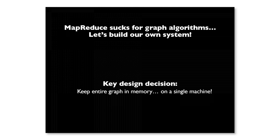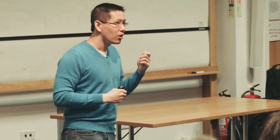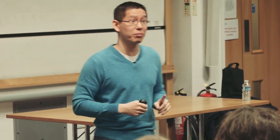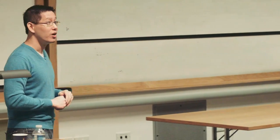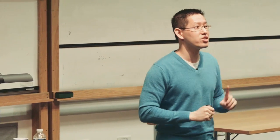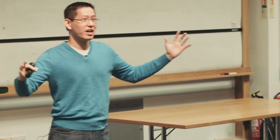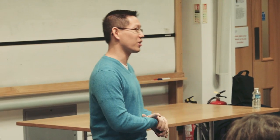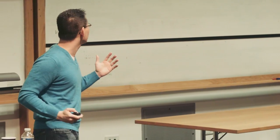So if MapReduce sucks for graph algorithms, the next logical solution is: let's build our own system. We made a very interesting design decision in building the system — we're going to keep the entire graph in memory. That in itself isn't controversial. But the subsequent decision is slightly odd: we're going to keep the entire graph in memory on a single machine. You might say this is nuts, this goes against everything we've been taught about building scalable distributed systems — you scale out using commodity machines, you don't scale up by throwing more memory at it. But this was exactly the solution we adopted.